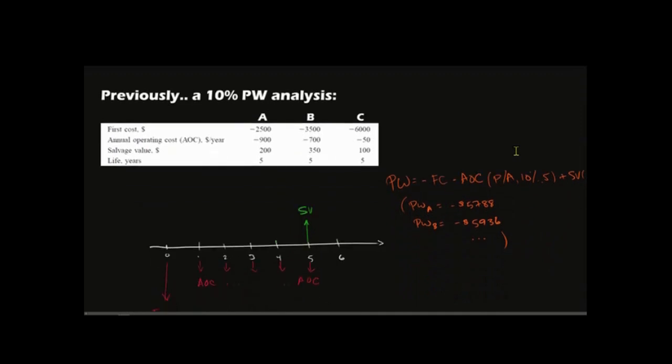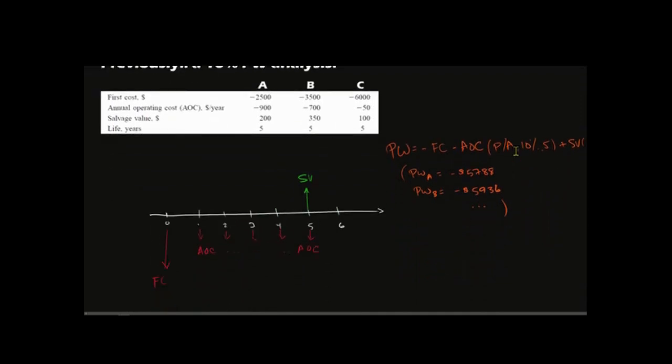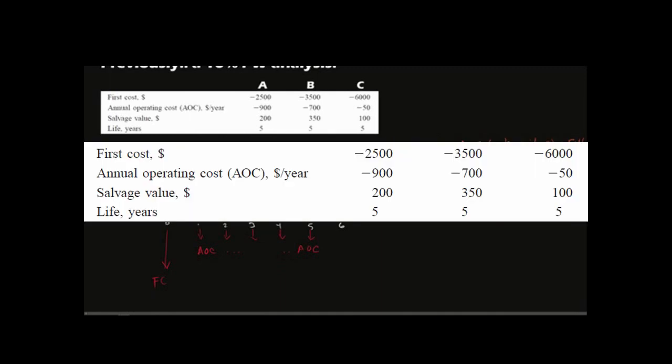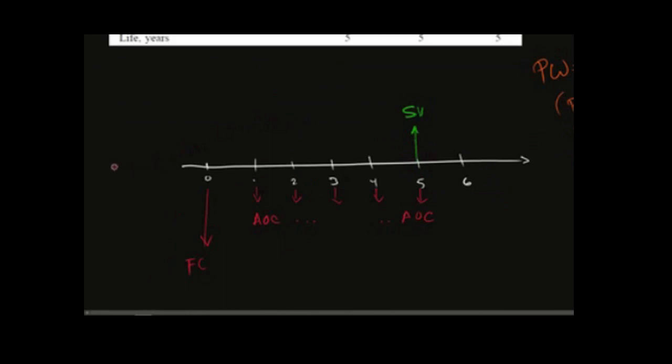So previously we had seen this, for example, where we were using 10 percent for a present worth analysis, and we had three options to go off of, which was A, B, and C. And the cash flow diagrams for those were essentially the same, just like you see here. The only difference was the fixed cost, the annual operating costs, and the salvage value that we experienced.